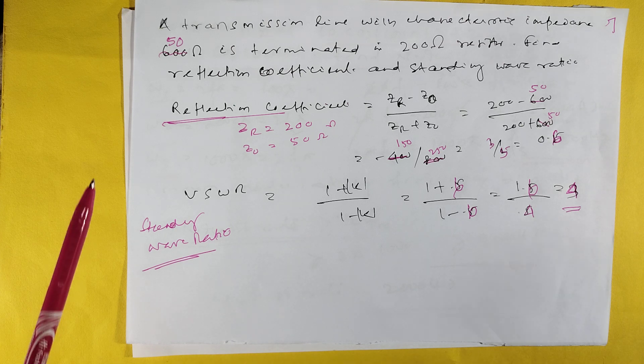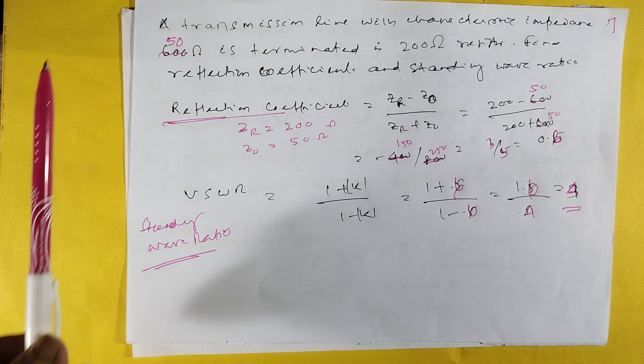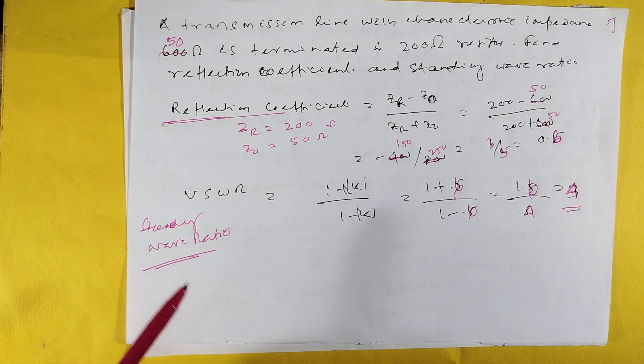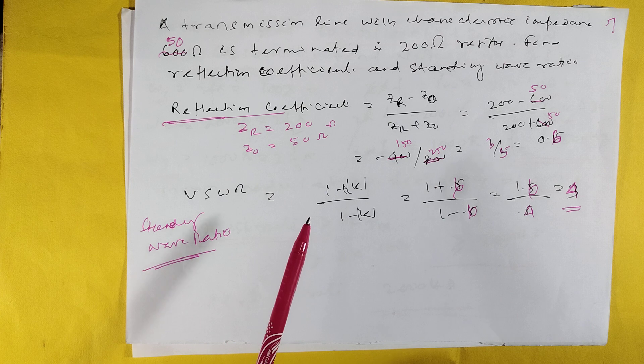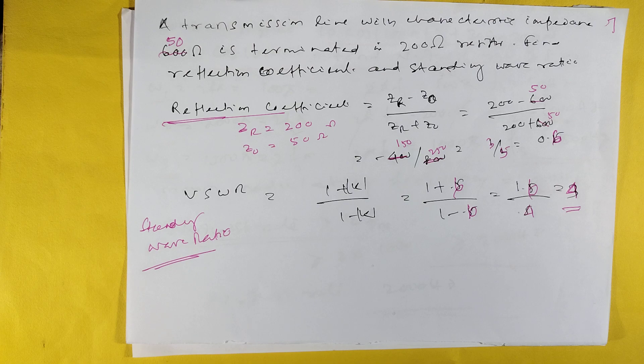A transmission line with characteristic impedance 50 ohms terminated with 200 ohm resistance. Find reflection coefficient. Reflection coefficient = (ZR - Z0)/(ZR + Z0), where ZR = 200, Z0 = 50, giving reflection coefficient of 0.6. Voltage standing wave ratio = (1 + Γ)/(1 - Γ) = 1.6/0.4 = 4.